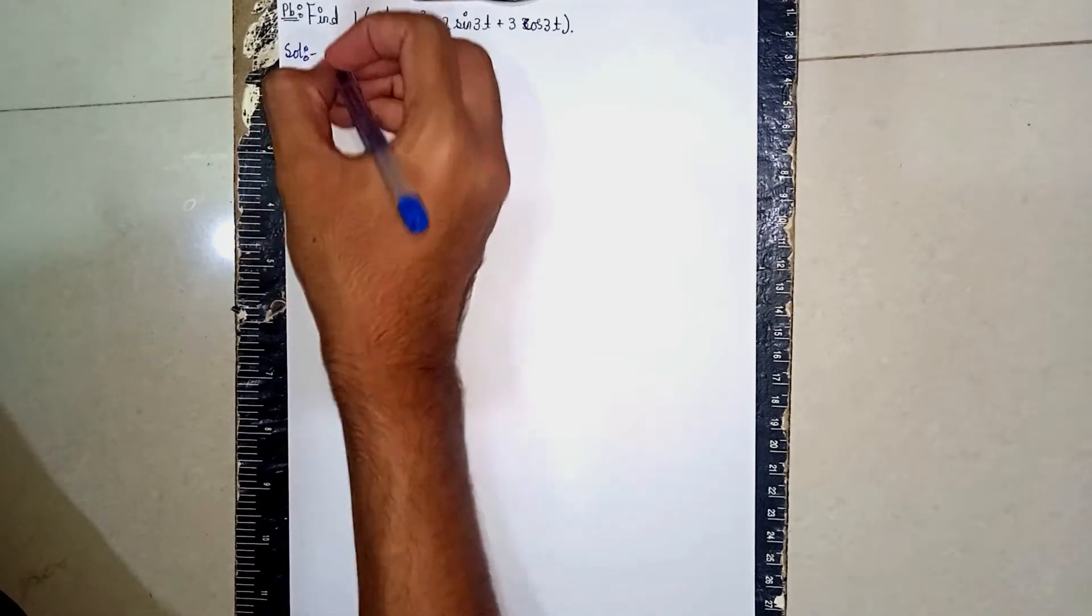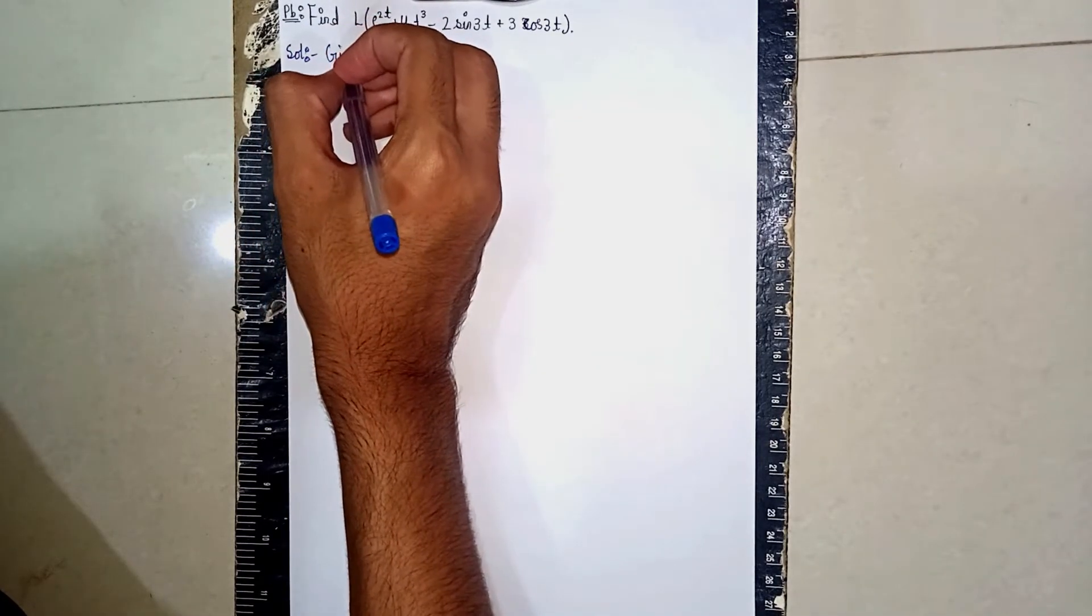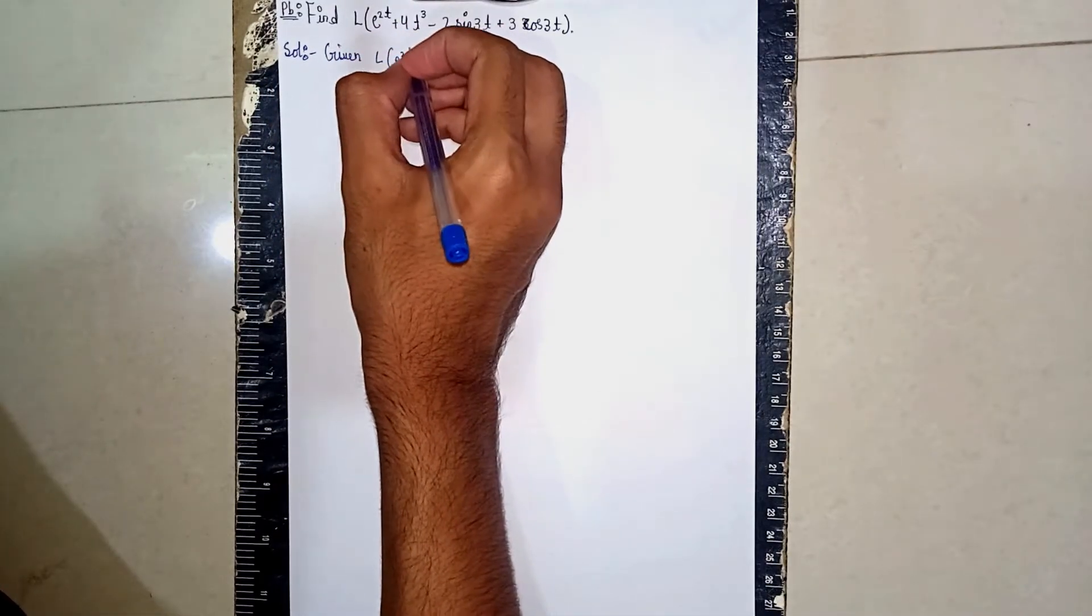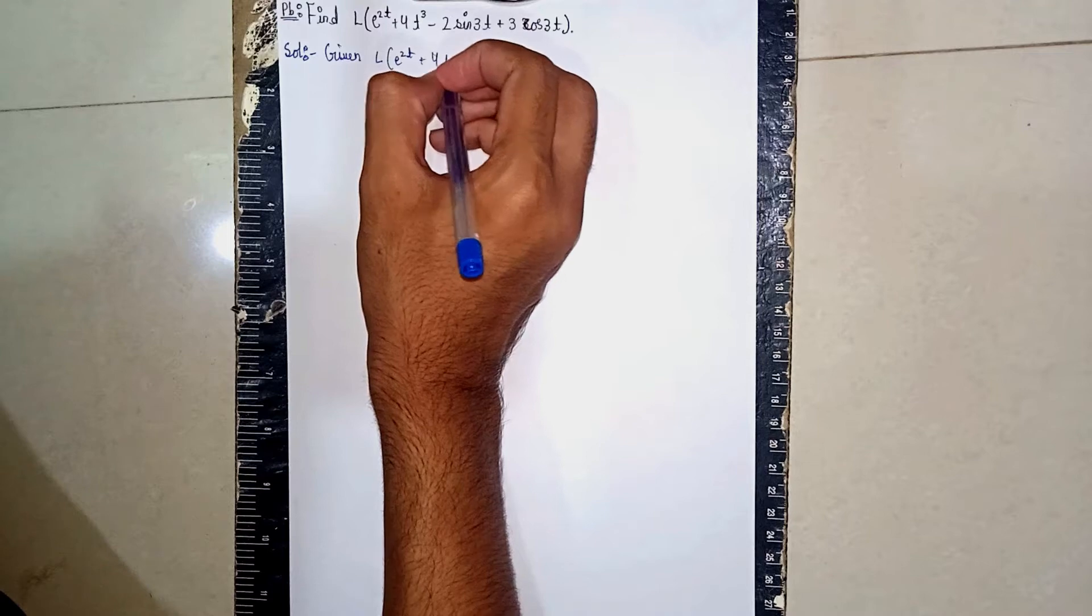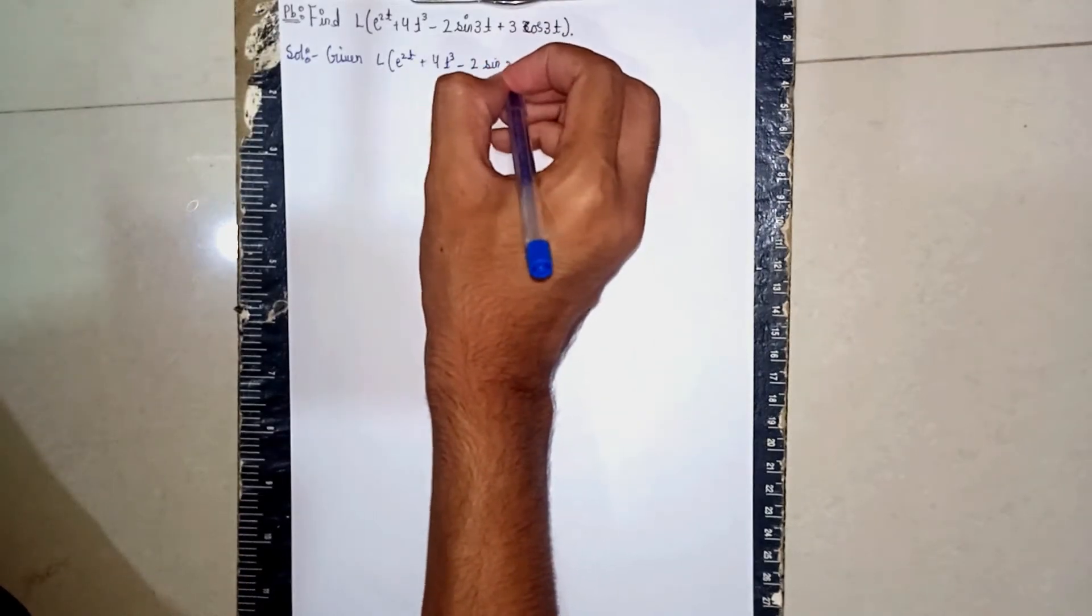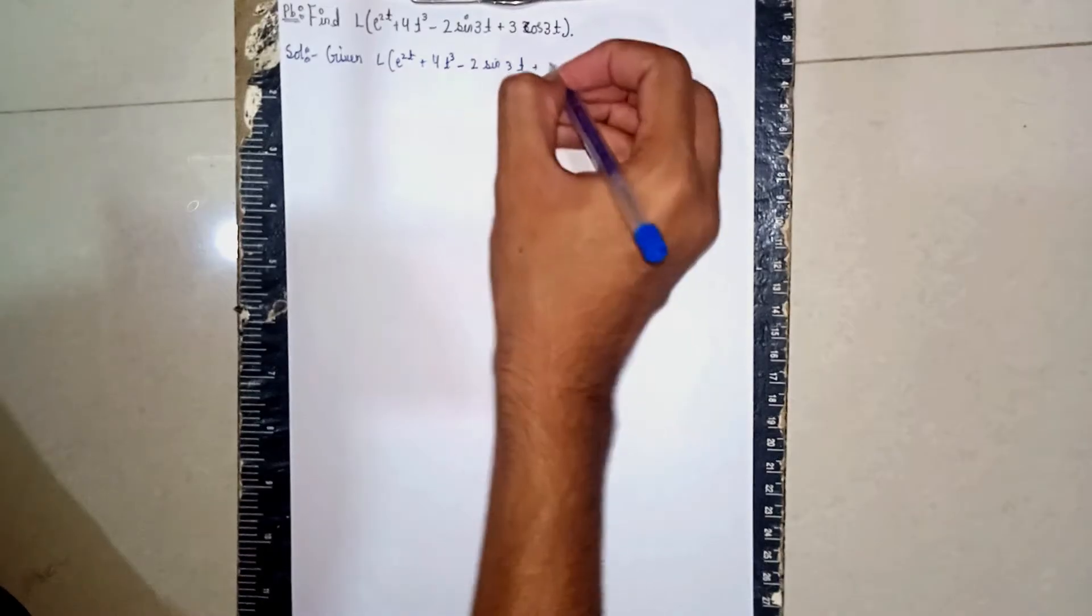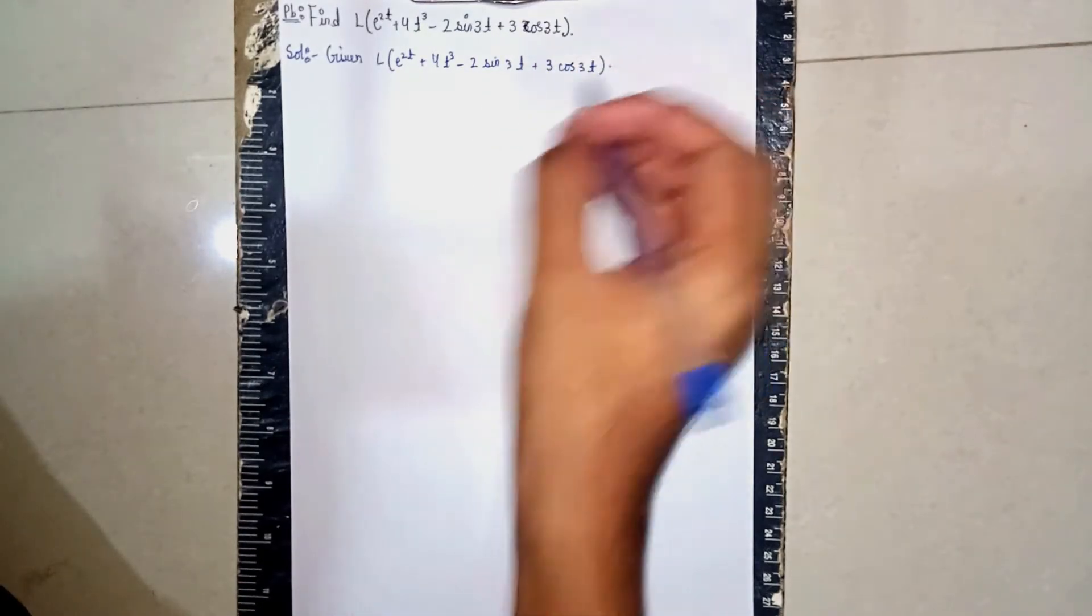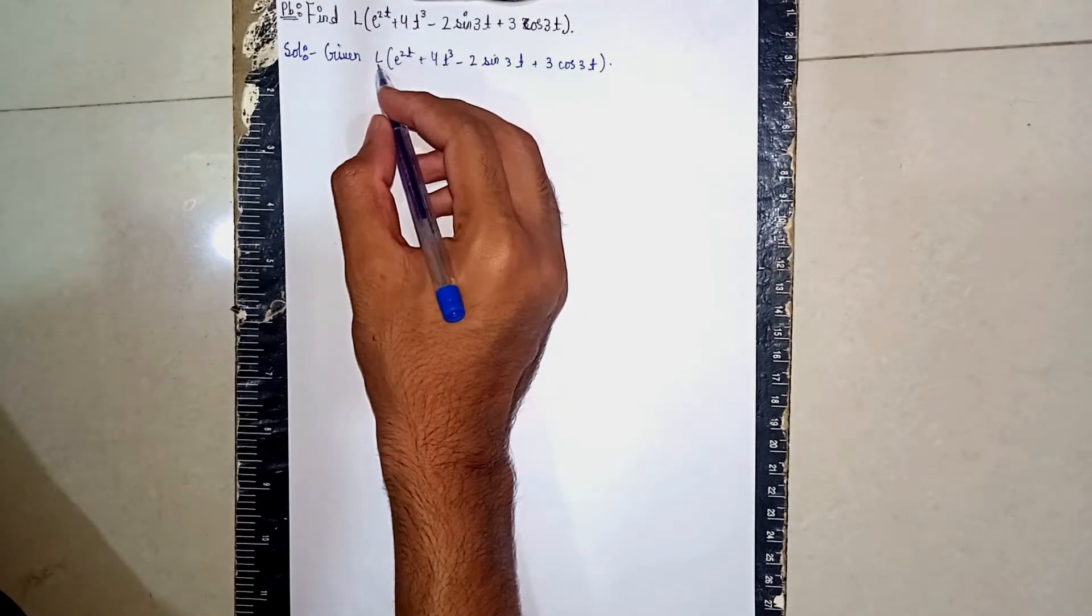Given: what is given? The question is Laplace of e^(2t) + 4t^3 - 2sin(3t) + 3cos(3t). First write. Now we will apply the Laplace to each term.